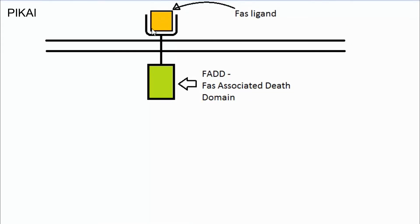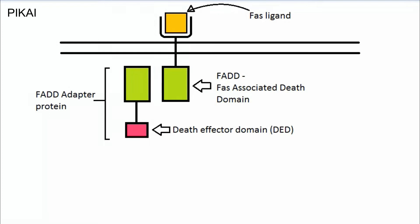The orange-colored FAS ligand comes along with the lymphocyte; it is present on the lymphocyte's surface. It now attaches to this receptor, and the FADD (FAS-associated death domain) gets activated. In this video, you will see many molecules with subunits — matching colors indicate the same subunits.